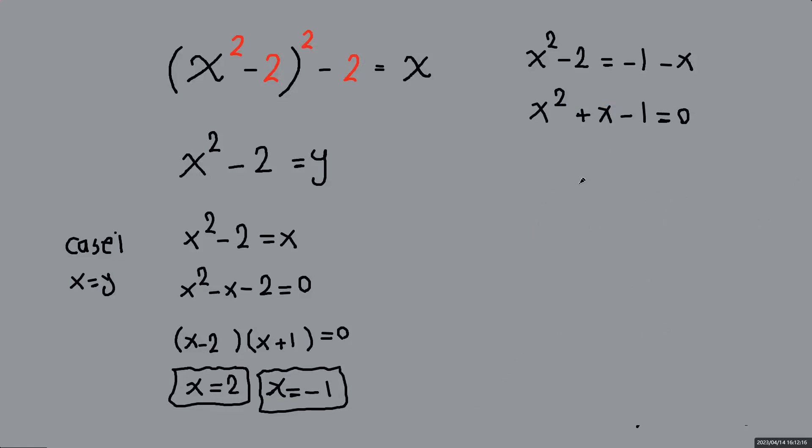So quadratic formula negative b, which is going to be negative 1 plus minus square root of 1 squared, 1 minus 4 times negative 1, plus 4 divided by 2a, a is 1, so 2.